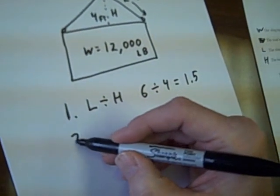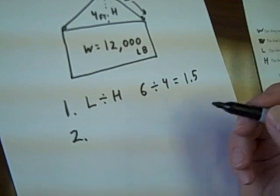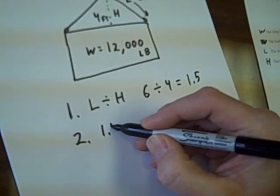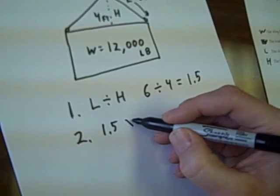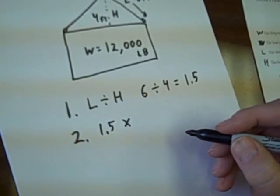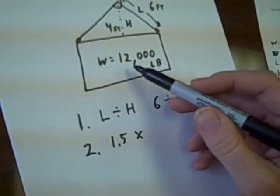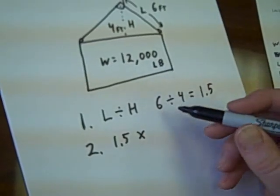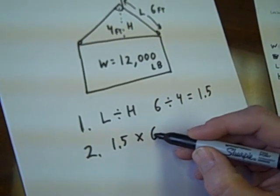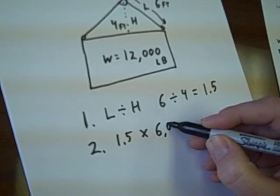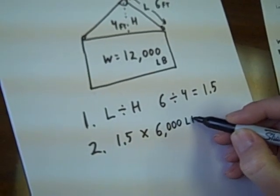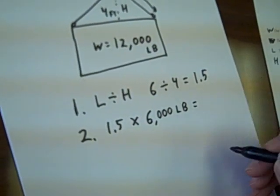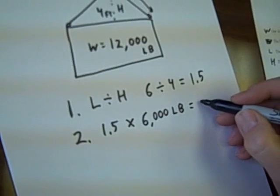The second step was to take that answer, 1.5, and multiply it times half of the weight. 12,000, half of that is going to be 6,000 pounds, and the answer to that is 9,000 pounds.